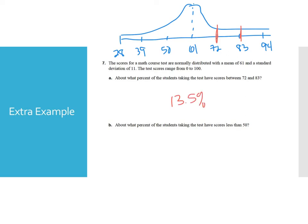The next question asks what percent of students have scores less than 50. Since 50 is one standard deviation below the mean, we add up the percents below that point: 13.5% + 2.35% + 0.15% = 16%. You really need to keep that one graphic available because you'll use it very regularly.